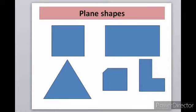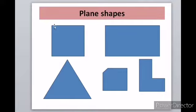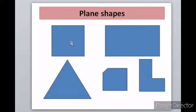Now let us see how to measure plane shapes. How will you measure the quantity of plane shapes? Plane shapes such as square, rectangle, and triangle — a plane shape has many sides and it is closed. A square has 4 sides; 4 lines together form a square. 3 lines joined together form a triangle. So these are shapes.